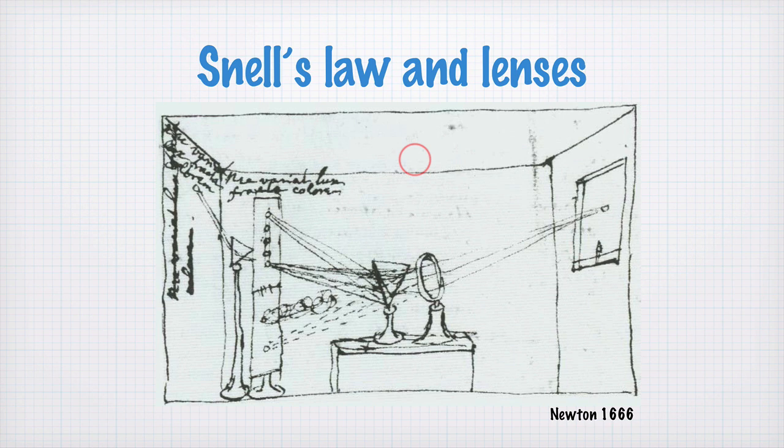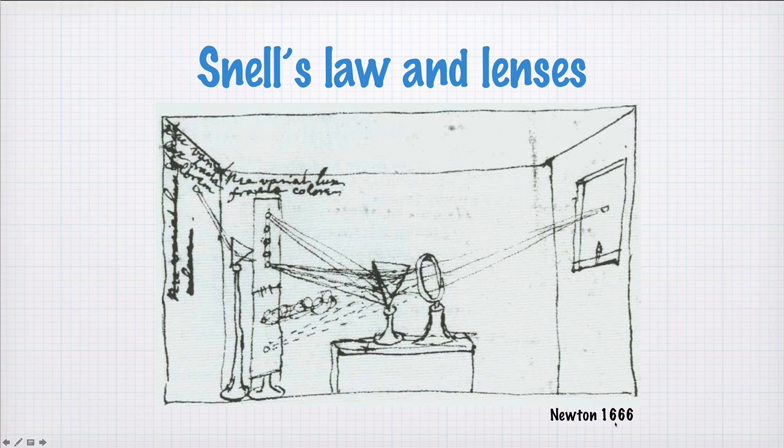Snell's Law tells you how light changes direction when moving between materials of differing refractive index. There are multiple ways of deriving Snell's Law and you've already seen one. You used the principle of least action to find the shortest path in time between two points where light crosses a boundary between refractive indices. We're going to derive Snell's Law again now from a wave perspective.